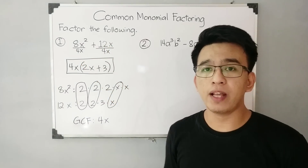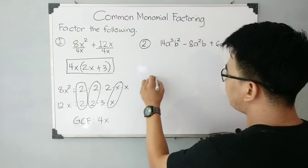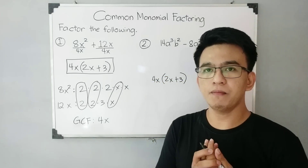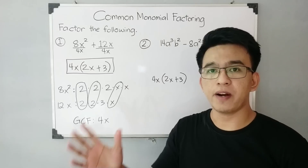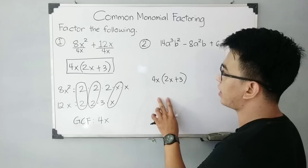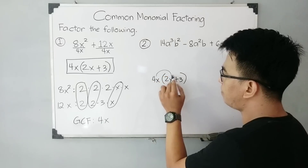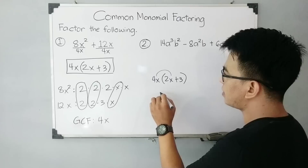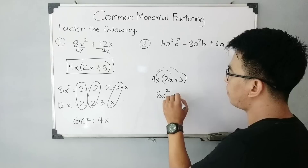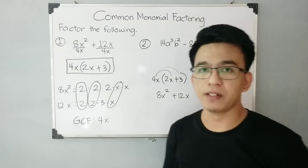We can check whether our answer is correct. Using these factors, we have 4x times the quantity 2x plus 3. Factoring is the reverse process of multiplying, so to check, we use the distributive property by multiplying each term by 4x. 4x times 2x is 8x squared, and 4x times 3 is 12x. As you can see, they are the same, so our answer is correct.